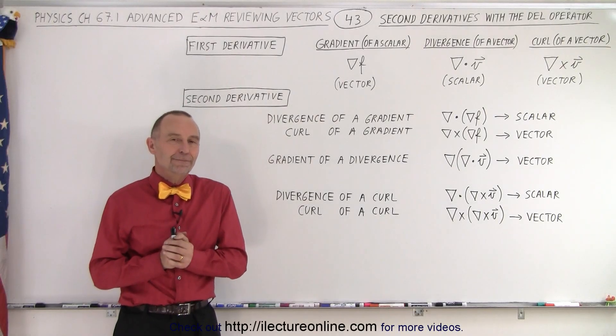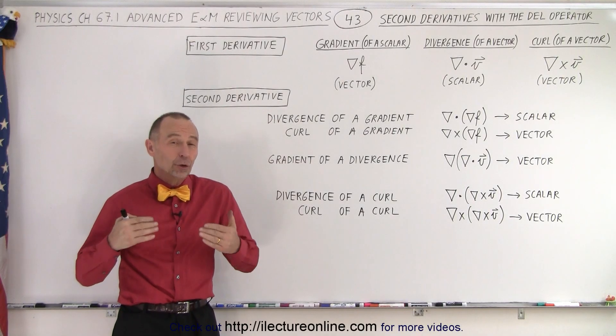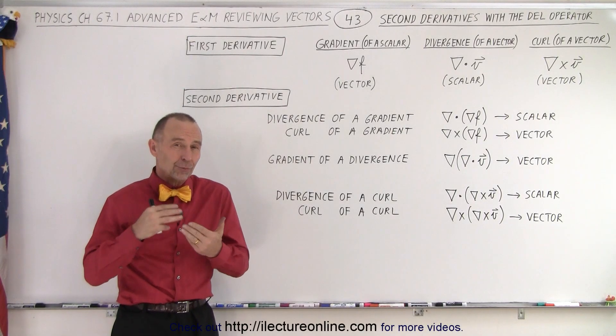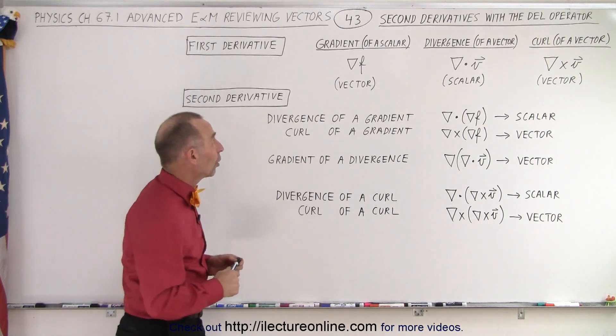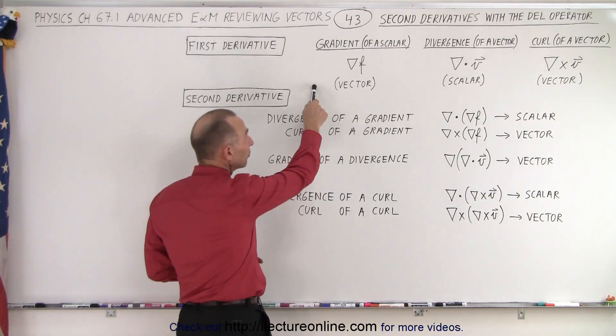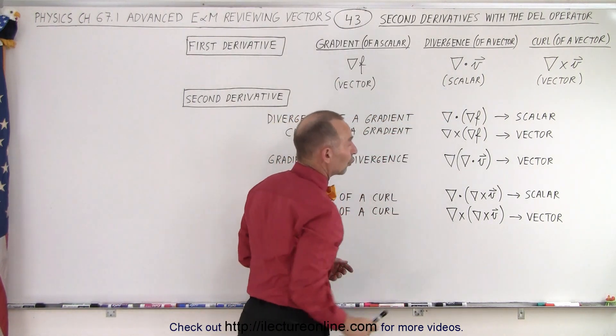Welcome to ElectronLine. So far we've taken a close look at three special operations. We call them the gradient, the divergence, and the curl.